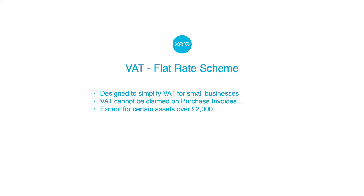There is an exception if you've got certain assets that you purchase that are over £2,000. What happens instead on the flat rate scheme is you simply pay over to HMRC a set percentage of your sales, and that percentage is based on the industry and type of business that you have.